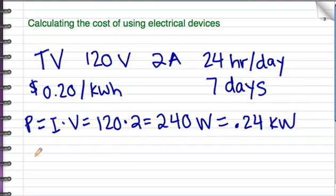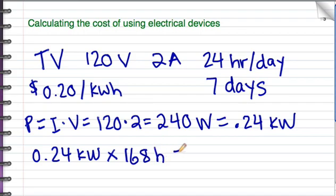If you multiply that by the number of hours, you can figure out the kilowatt hours. 24 hours a day times 7 days is 168 hours. So .24 kilowatts times 168 hours is 40.32 kilowatt hours.